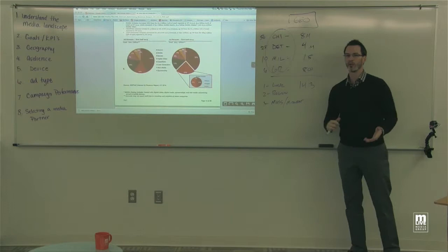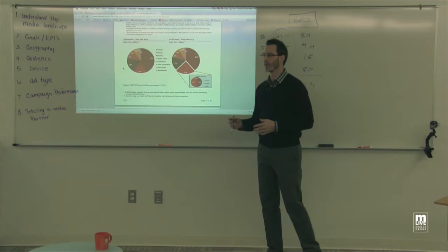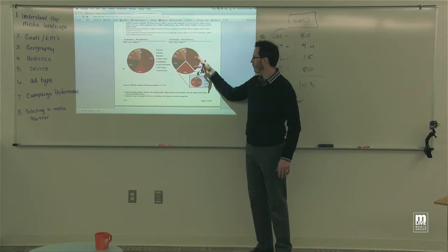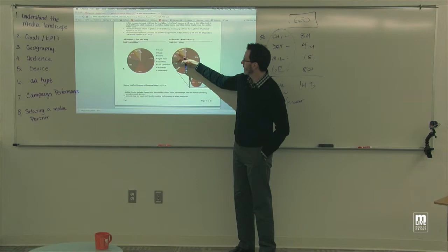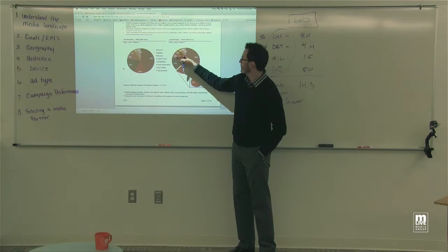This leads us to ad type. How much mobile do we do? How much desktop? Standard display? Rich media? Video? Looking at the current internet ad spending breakdown: 39% is in search, mobile is now 23% of all online ad spending, 17% in banners and display, 6% in video, 6% in lead generation, rich media at 3%, and sponsorship at 2%.